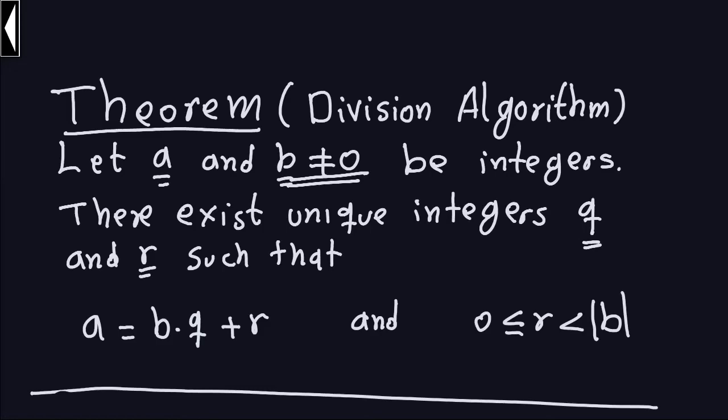Hello and welcome again. As we mentioned in the previous couple of videos, we saw that Java has two methods: one to compute the quotient and the other to compute the remainder. But those methods don't work well with negative numbers. So we need a way to compute Q and R that come from the division algorithm and actually give us the correct numbers.